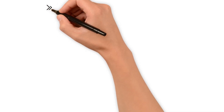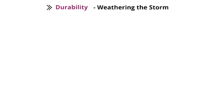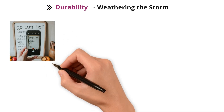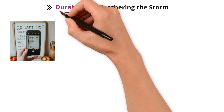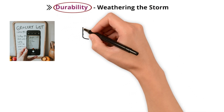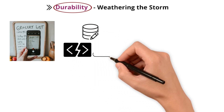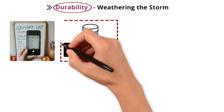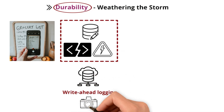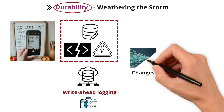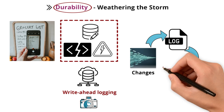Last but not least — Durability, or weathering the storm. Imagine writing a grocery list on a whiteboard and taking a picture for backup. Durability guarantees that changes you make to the database persist even in case of system crashes or power outages. The DBMS uses techniques like write-ahead logging, which acts like that picture, ensuring changes are written to a log and then applied to the actual data storage so a crash wouldn't affect your data.